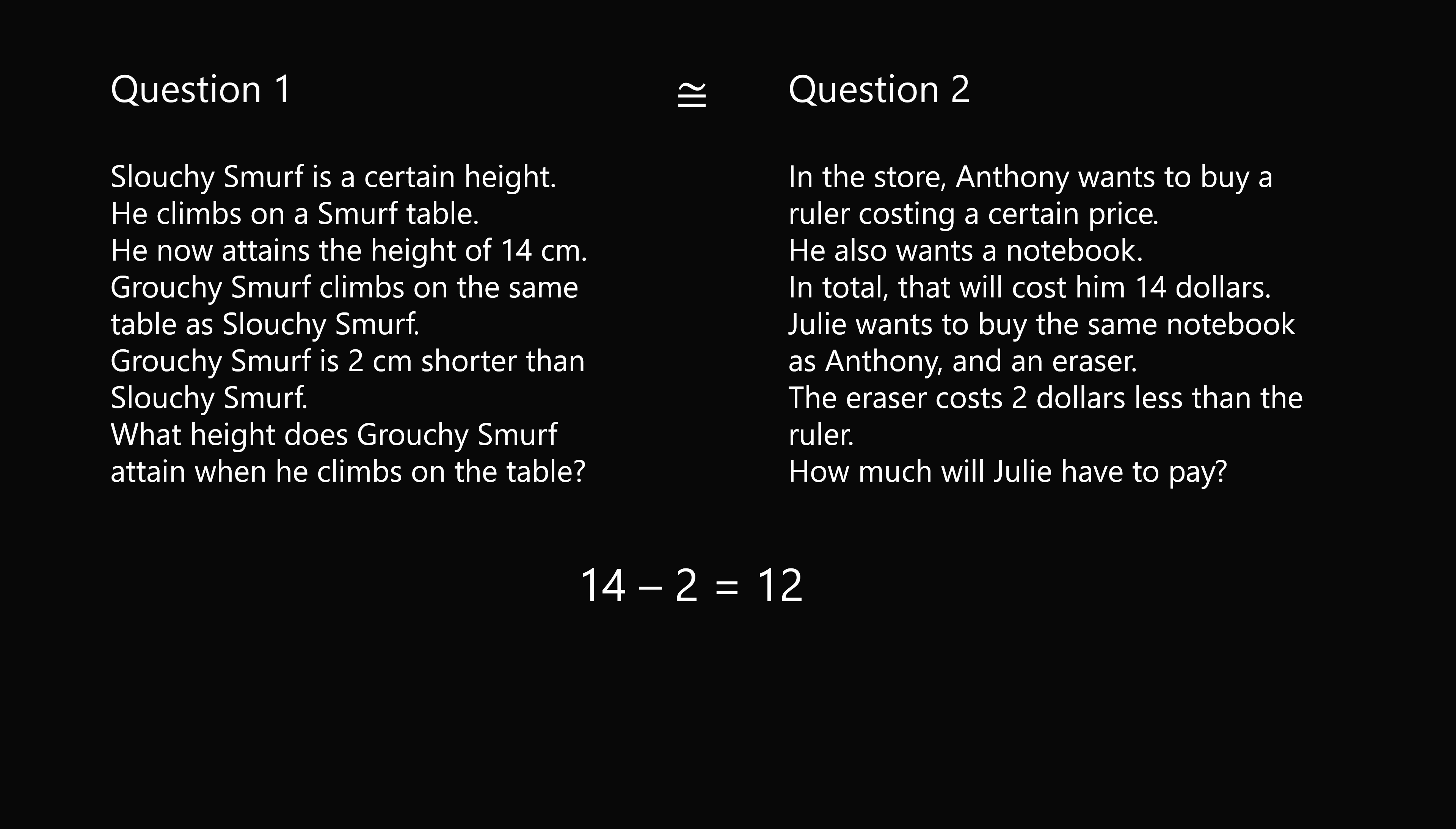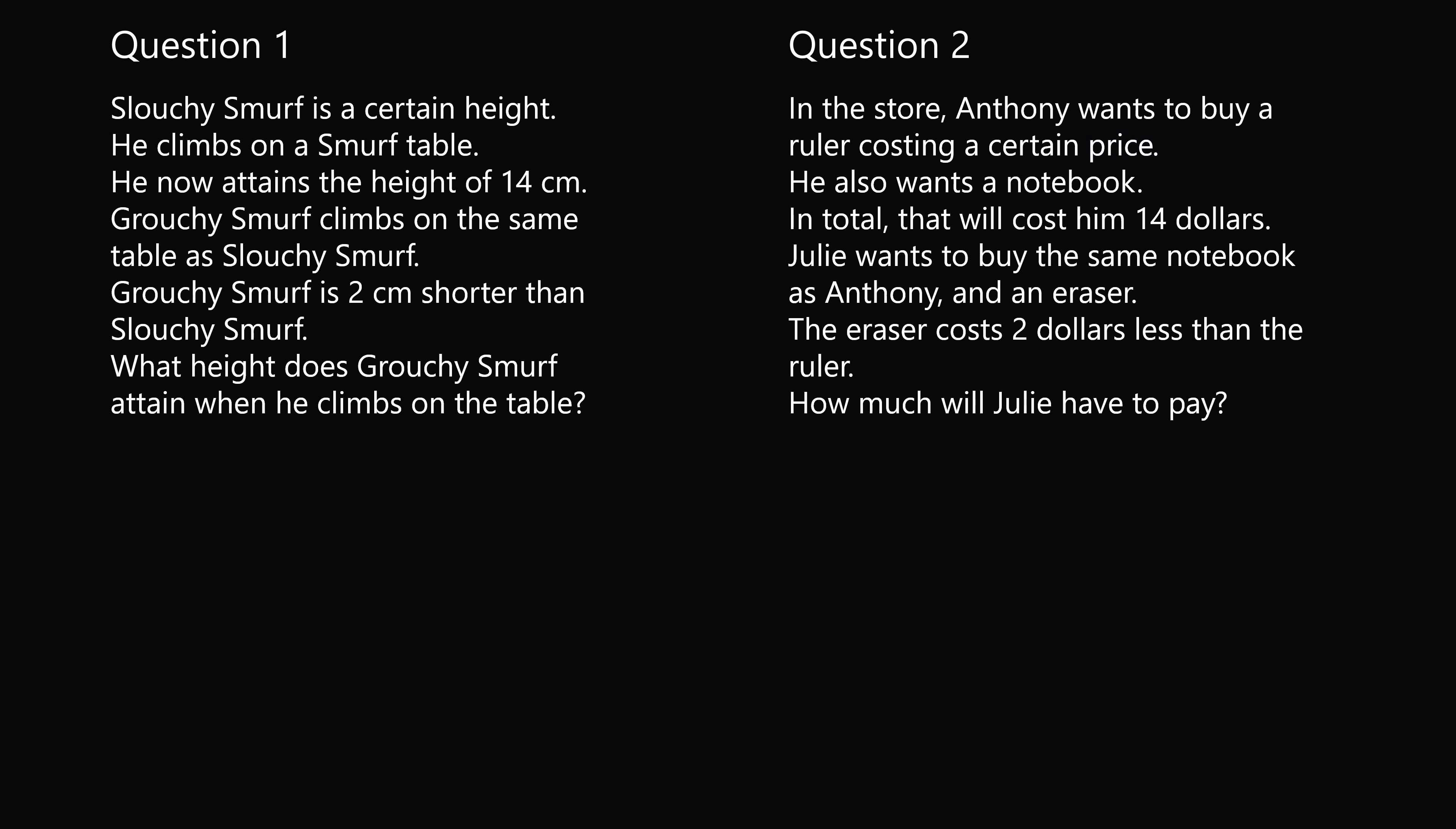However, the participants did not find the two questions to be the same. Question 2 was asking about price, and question 1 was asking about height. Height is a kind of number that we imagine on an axis or a number line, which is an ordered number. We think about distance, duration, and floors as types of ordinal numbers.